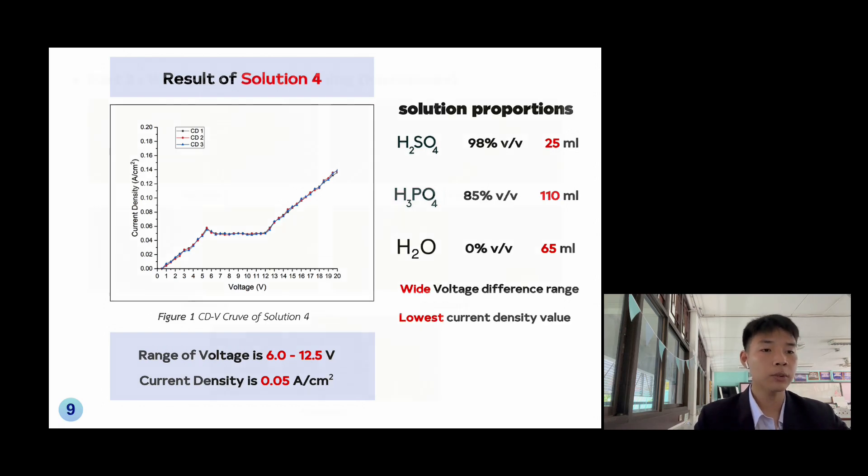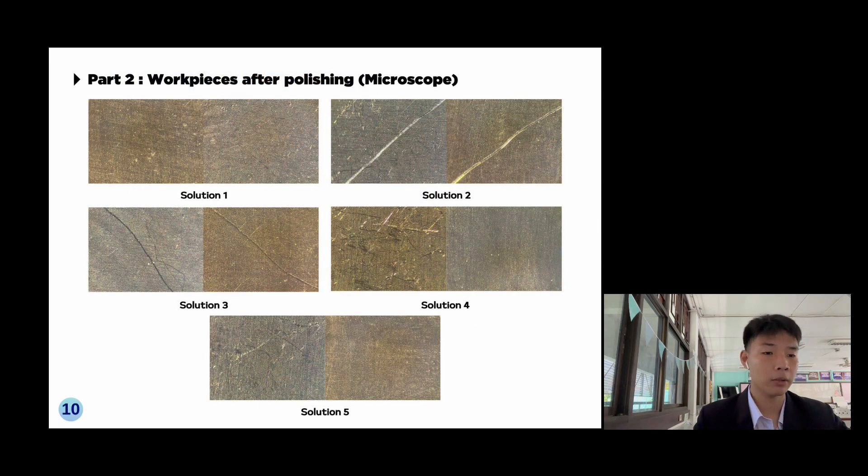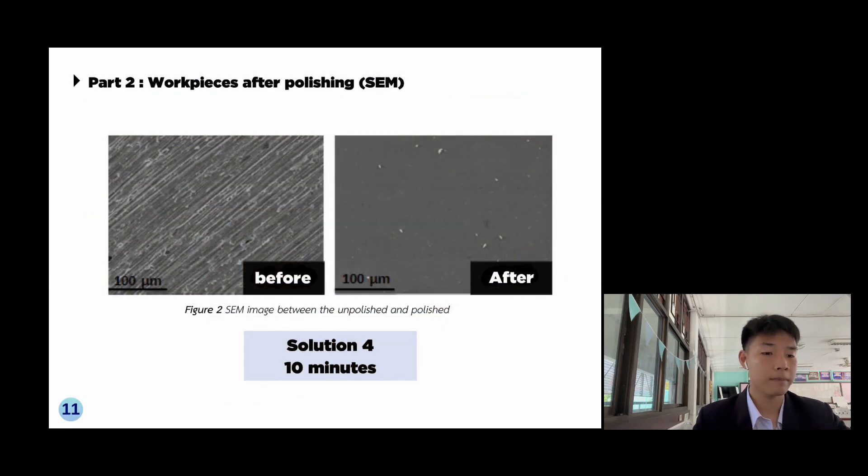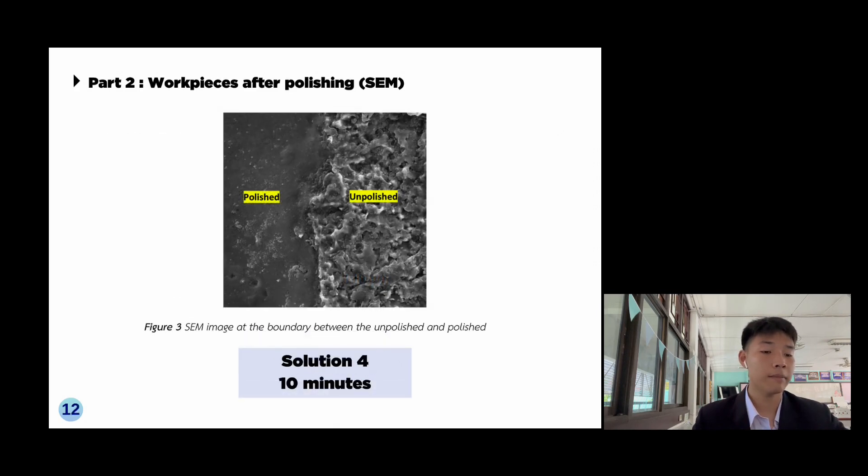Part 2: workpiece after polishing. This is the workpiece after polishing by scanning electron microscope. Figure 2 shows SEM images between the unpolished and polished samples of solution 4 for 10 minutes. Figure 3 shows SEM images at the boundary between the unpolished and polished areas of solution 4 for 10 minutes.